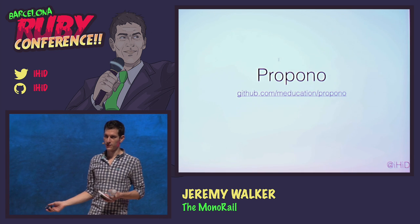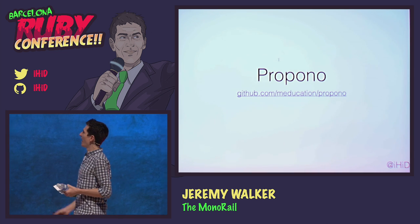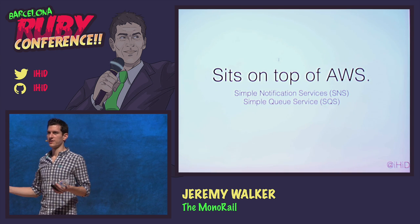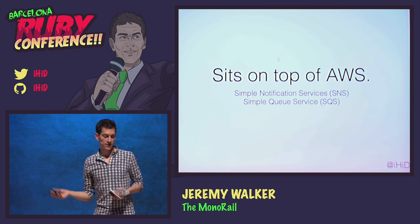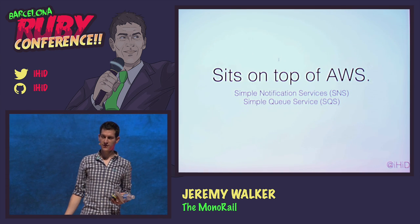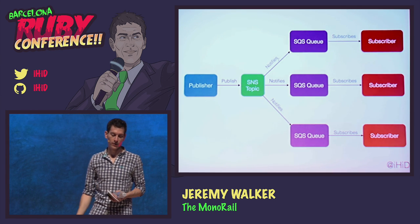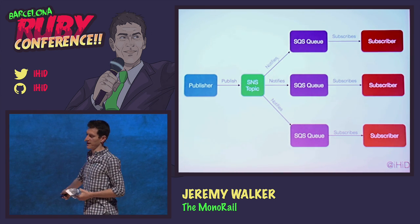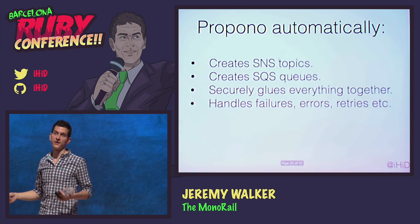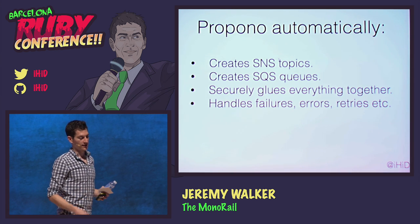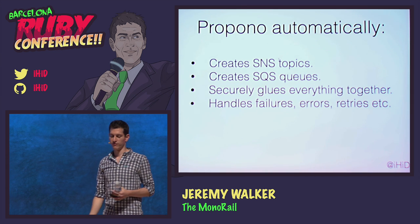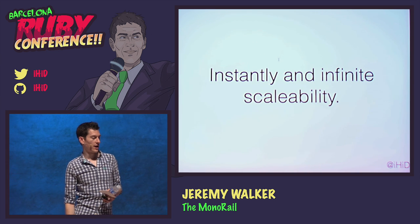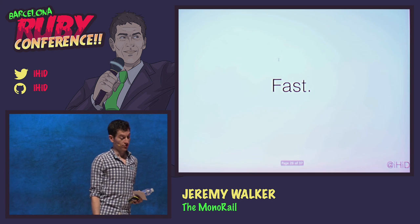So we made a gem called Propono, which is what I'm going to be talking about and you're all going to use in a minute. This is a gem built on top of Amazon Web Services which gives you PubSub in an incredibly simple fashion within Ruby. We built this on top of Simple Notification Service and Simple Queue Service. You publish a message out onto an SNS topic, that gets proxied onto various SQS queues, and that ends up with various subscribers. But Propono handles all of this automatically — it creates those things, securely glues everything together, handles failures, errors, and retries.